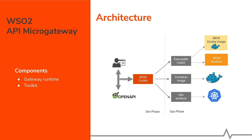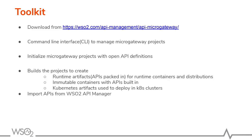First of all, let me briefly explain the architecture of WSO2 API Microgateway. It has two basic components: the Gateway Runtime and the Gateway Toolkit. The Toolkit accepts OpenAPI definitions, creates Microgateway projects, and later builds Microgateway Runtime artifacts that are used by the Microgateway Runtime component.